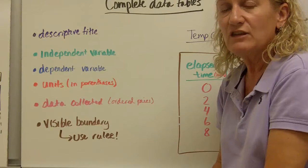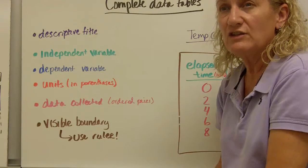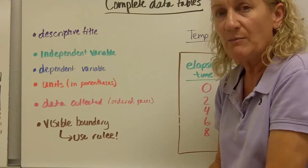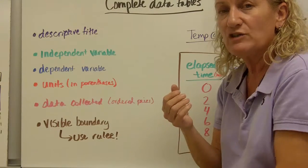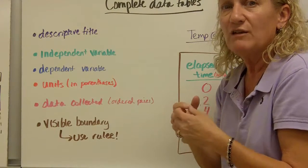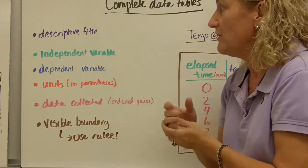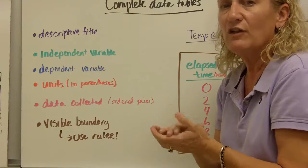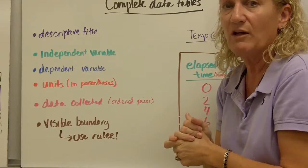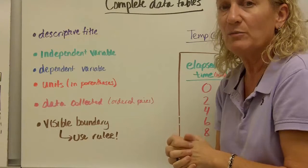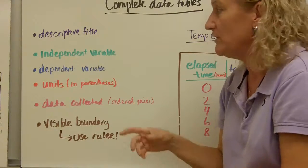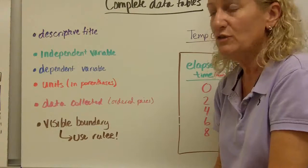Independent variable, that's the thing that you change or the thing that changes. Frequently, it's time, unless you're measuring time with a stopwatch. But generally, if you're taking readings over time, time is your independent variable. There are other things that could be your independent variable as well. If you're struggling with independent variable, please watch the video on variables. Dependent variable is what you actually measure.